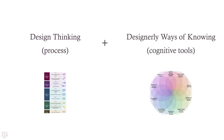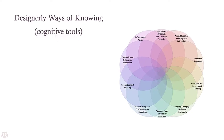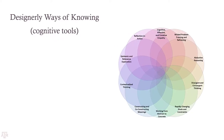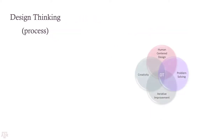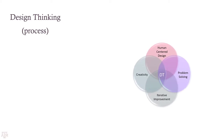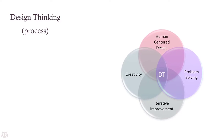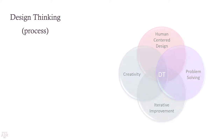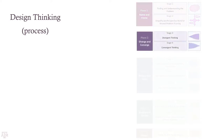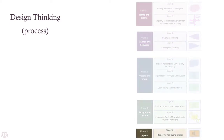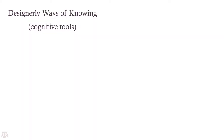This model integrates the design thinking process with designerly ways of knowing — the cognitive tools used by expert designers. Design thinking is a problem-solving process that emphasizes perspective taking, innovative solutions, and iterative development. The design thinking process involves five phases: Name and Frame, Diverge and Converge, Prepare and Share, Analyze and Revise, and Deploy.